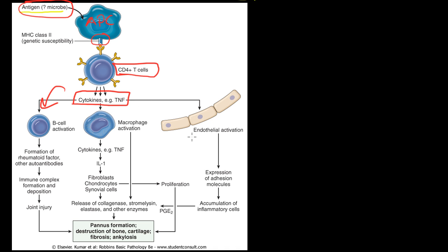Another thing that these cytokines cause is endothelial activation, which causes the expression of adhesion molecules. You have endothelial activation, which leads to accumulation of more inflammatory cells, which then secrete PGE2. There's several ways by which you get these feedback loops going on. Ultimately, it leads to pannus formation, destruction of bone, cartilage, fibrosis, and ankylosis.